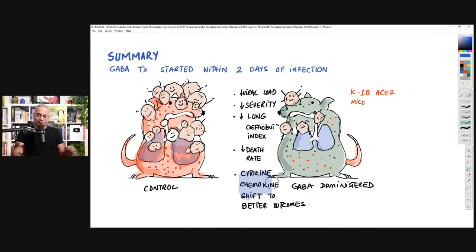In this group, within seven to eight days, those mice that were not given GABA, 80% of them died, 20% survived. And those mice that were given GABA, administered GABA, 80% survived and 20% died. So 20% survival versus 80% survival.